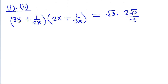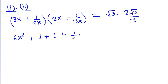Expanding: 3x times 2x will be 6x square, plus 3x times 1 by 3x will be 1, plus 1 by 2x times 2x will be 1, plus 1 by 2x times 1 by 3x will be 1 by 6x square. On the right hand side, root 3 times root 3 gives 3, which cancels with the 3 in the denominator, leaving 2.